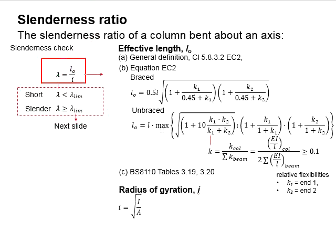Lambda is equal to the effective length divided by the radius of gyration. The equation of radius of gyration is given here, which is the square root of the second moment of inertia and the effective area of the column.